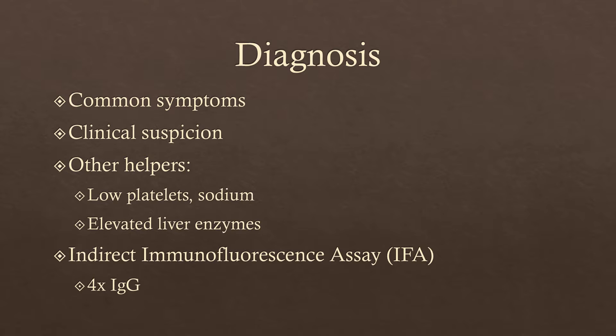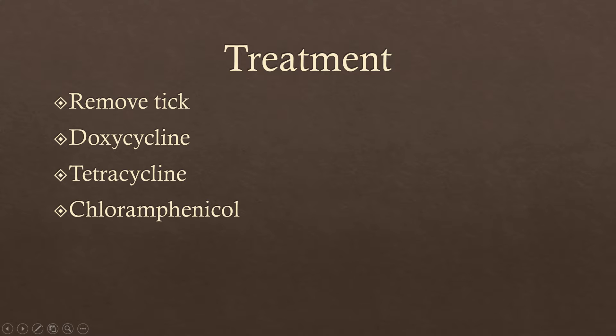A prothrombin time test can reveal decreased platelet counts. Histochemical staining or a PCR assay can be used to look for genomic evidence of the rickettsial bacteria. Also commonly used to diagnose this disease is the indirect immunofluorescence assay, which will show a four-fold increase in IgG antibodies and will sometimes also show an increase in IgM antibodies.